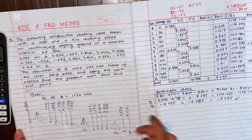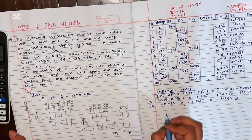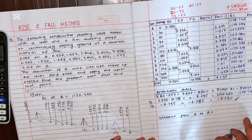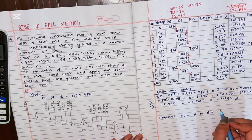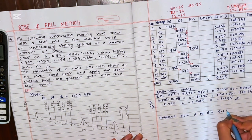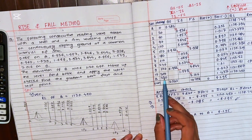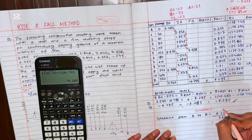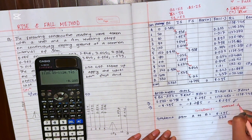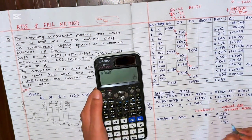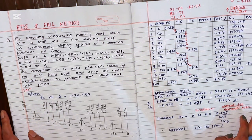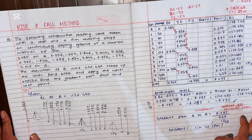Finally, we calculate the gradient from A to B. Gradient equals vertical difference divided by horizontal distance. The elevation difference is 8.295 meters and the horizontal distance is 330 meters, giving a gradient of 1 in 40 fall. This concludes the numerical. We will solve another numerical in the next video. Thank you so much for watching — please like and subscribe to my channel.